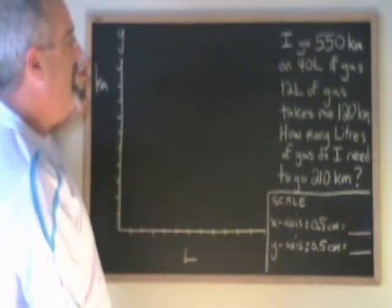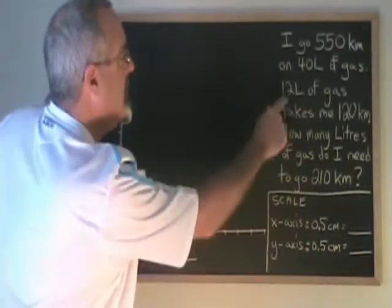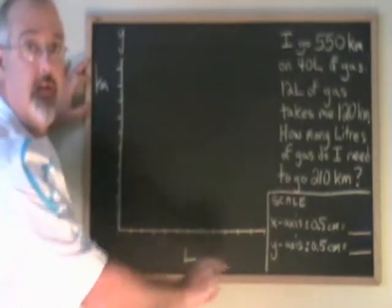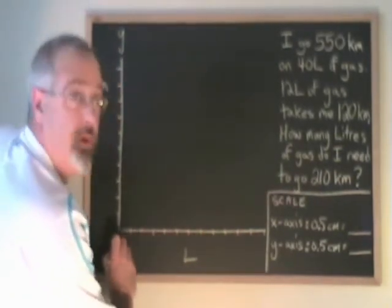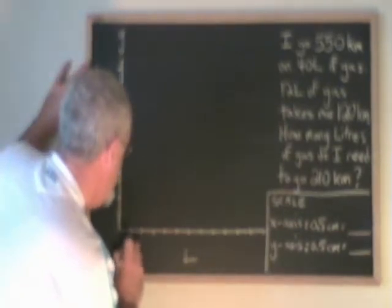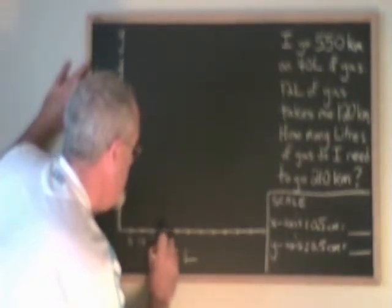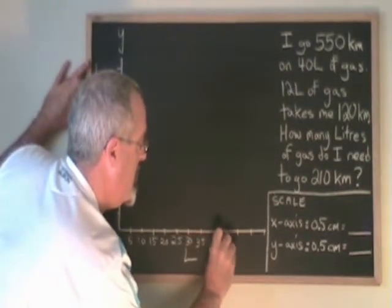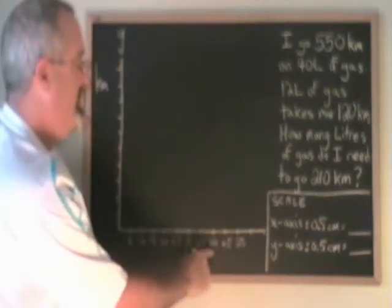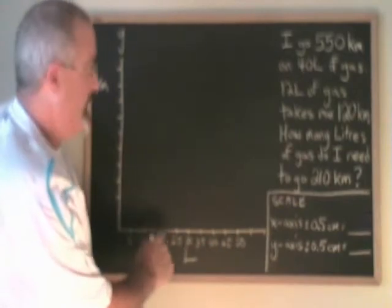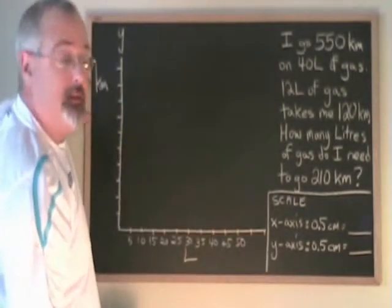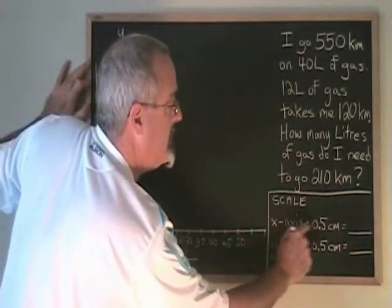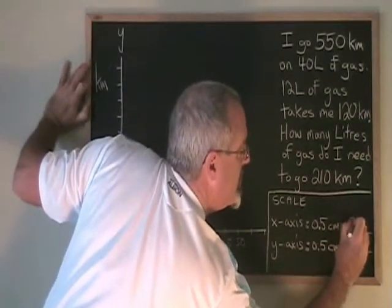Looking at the x-axis, I have 40 liters and 12 liters. The biggest number is 40. I have to make sure that 40 is going to fit on this axis. If I make each square of my graph paper equal to 5, 40 will be right here. So it will fit on my graph, but I'm using my space along the x-axis. That means each square is equal to 5 liters. On my scale, I say x-axis 0.5 centimeters equals 5 liters.